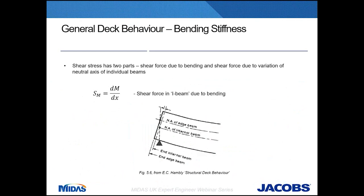Shear stress is built up from two parts: first, shear stress due to bending of longitudinal members, similar to the theory of I-beams; second, due to variation of the neutral axis of individual beams. Because longitudinal members are flexed separately, each results in zero extension along its own neutral axis. As a result of these members rotating about points at different levels, a relative longitudinal displacement is created. Resistance to this displacement is accommodated by the high stiffness of the top and bottom slabs. To avoid this effect, I-values are calculated about the neutral axis of the deck as a whole.